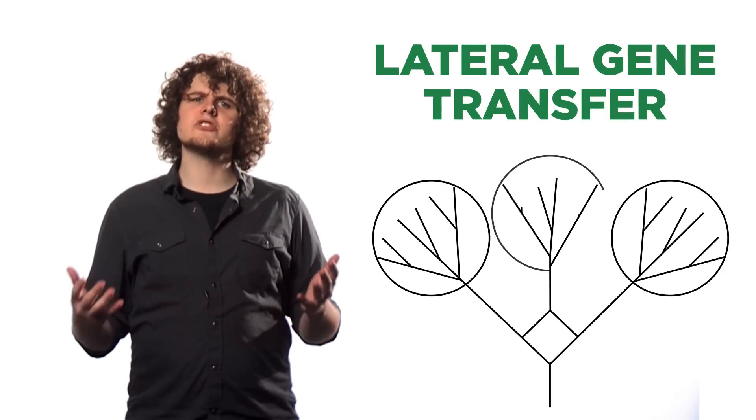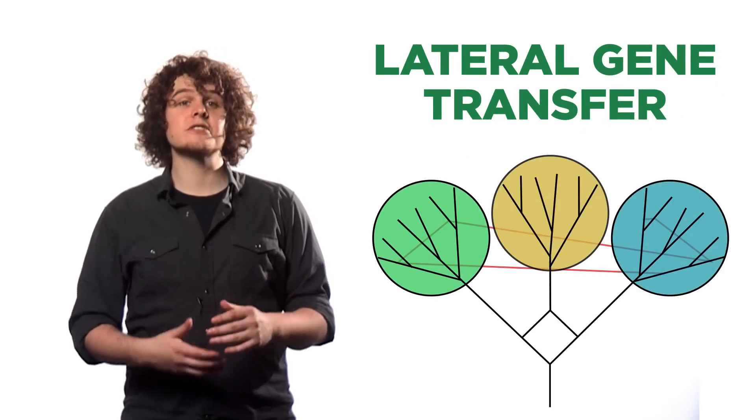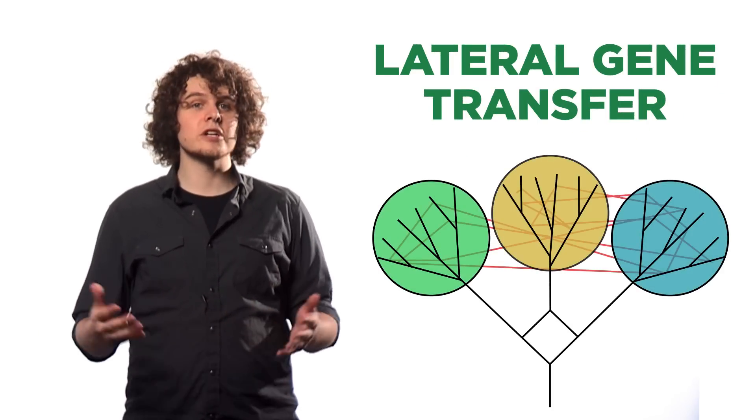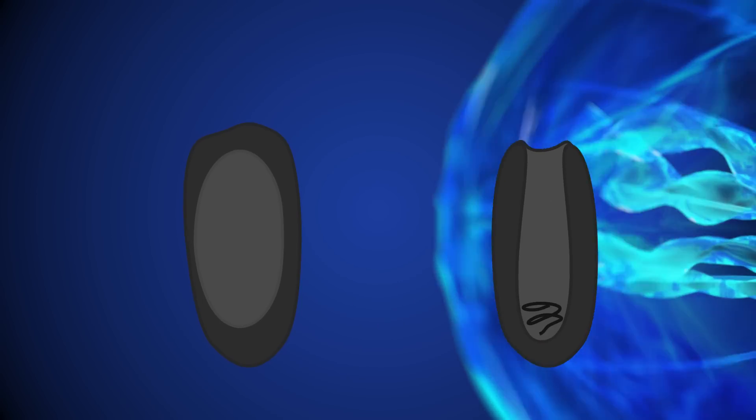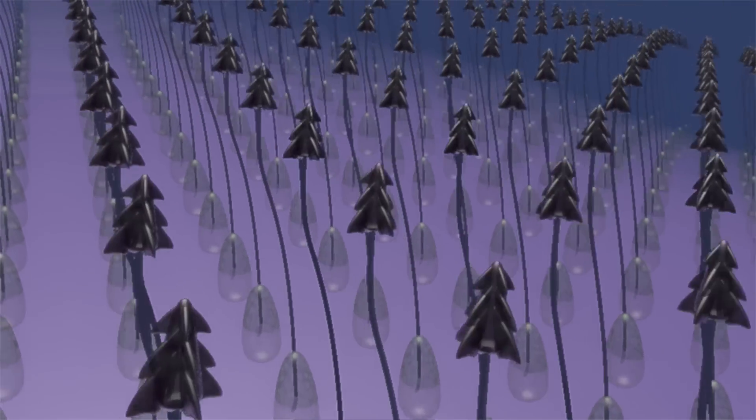But there is another way to share genetic traits that doesn't require sex. A process called lateral gene transfer allows many species to exchange genetic information with one another. For example, jellyfish developed their stingers by obtaining genes of a bacterium, helping them to develop the poisonous barbs they shoot at their prey on contact.